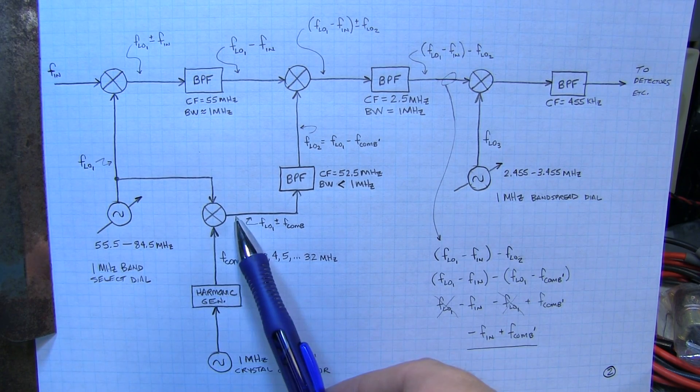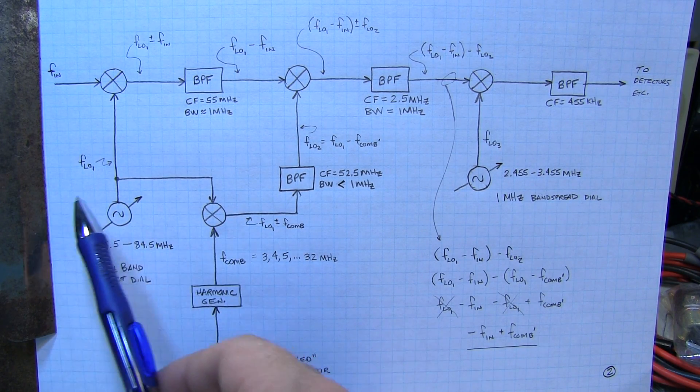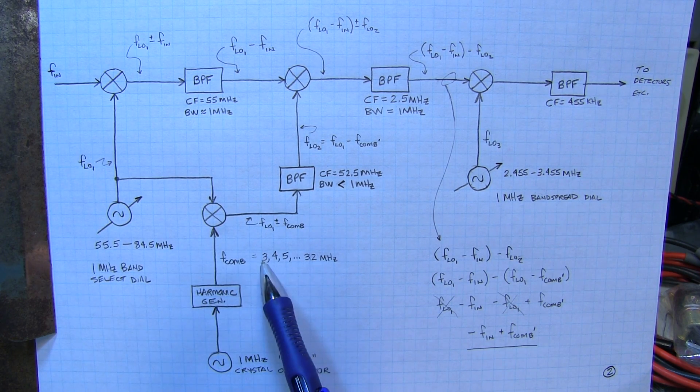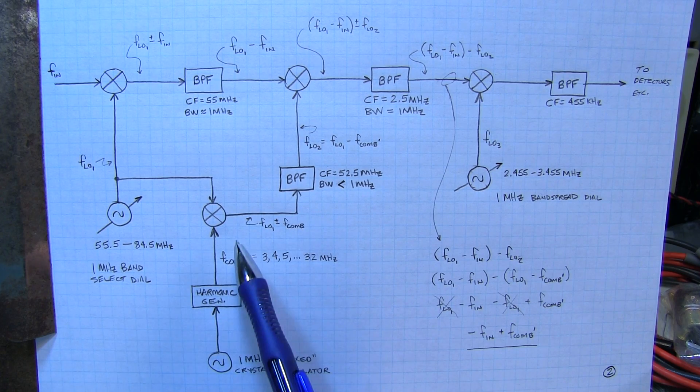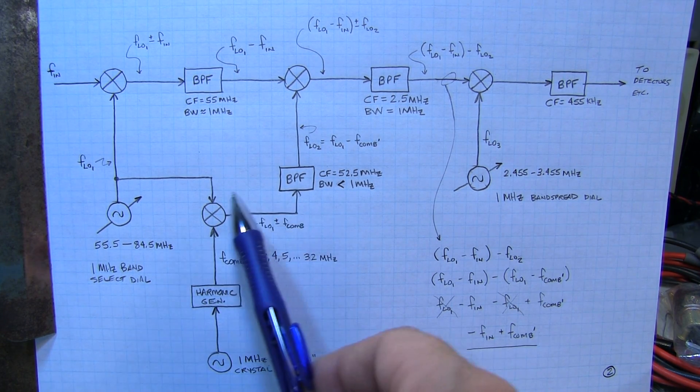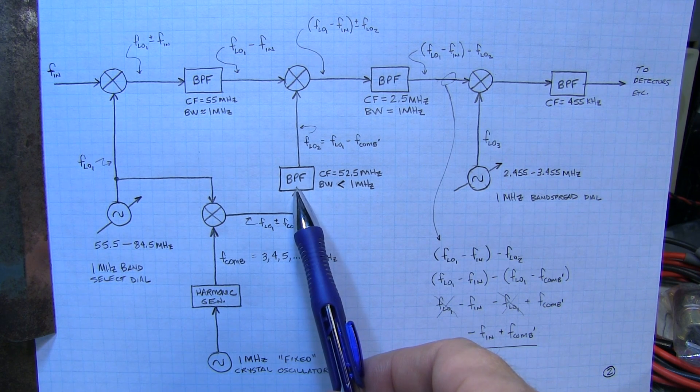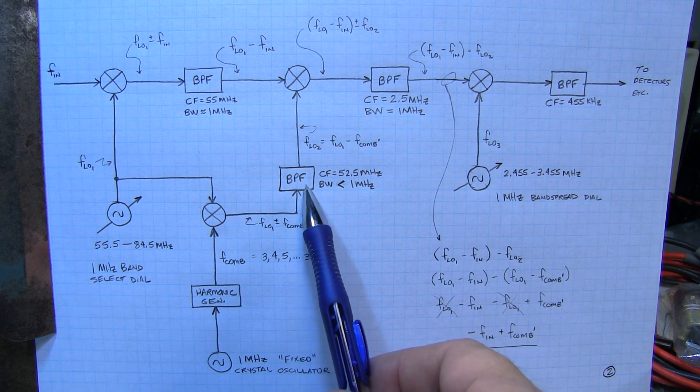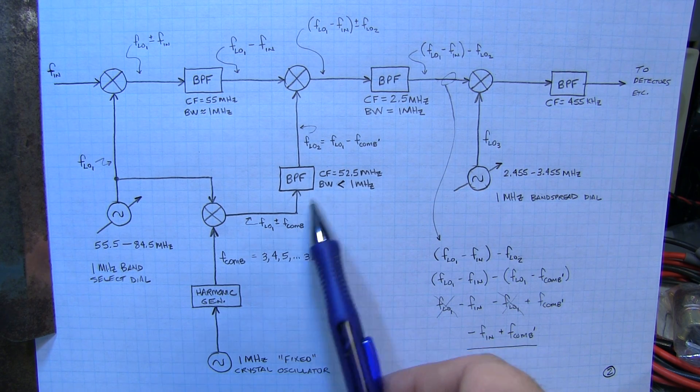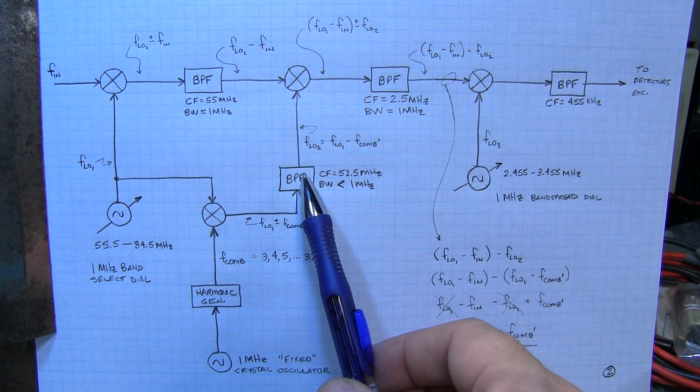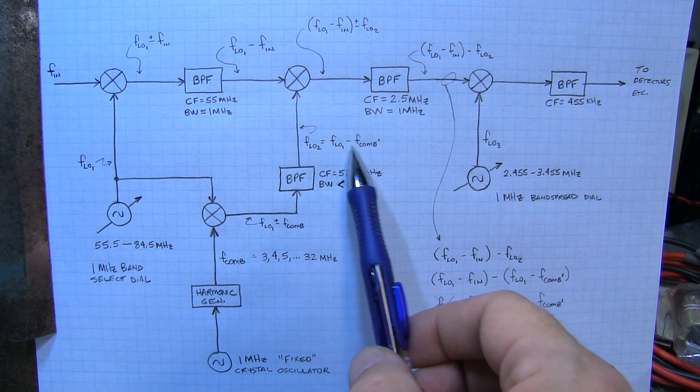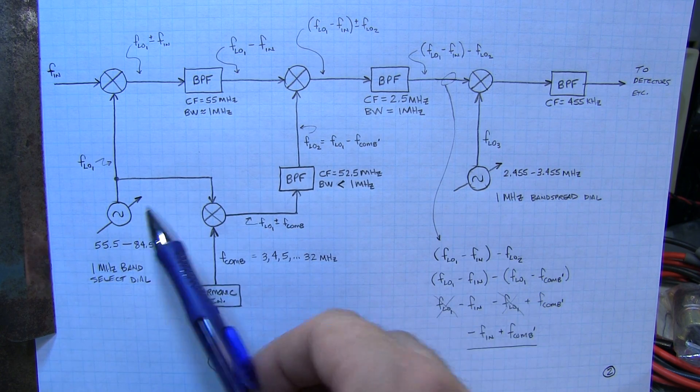All those signal tones are present into the other input of this mixer. So now at the output of this mixer we're going to have essentially the mixing components of the first local oscillator frequency plus or minus all of these tones from the comb generator. So this composite of all these mixing tones gets applied through a narrow bandpass filter.